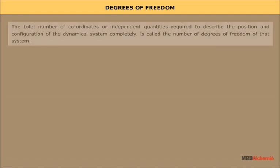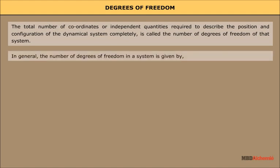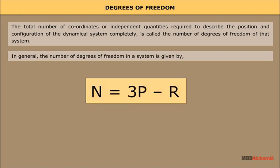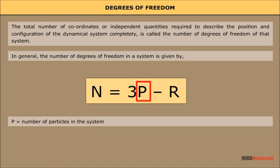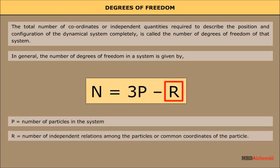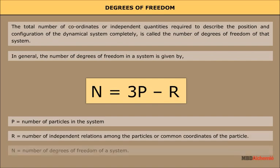Degrees of freedom: the total number of coordinates or independent quantities required to describe the position and configuration of a dynamical system completely is called the number of degrees of freedom of that system. In general, the number of degrees of freedom in a system is given by n = 3P - R, where P is the number of particles in the system, R is the number of independent relations among the particles, and n is the number of degrees of freedom.